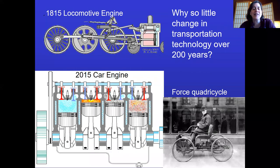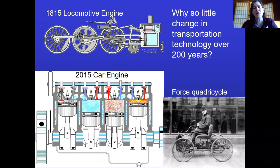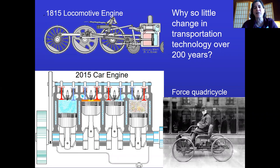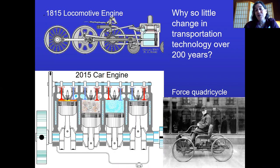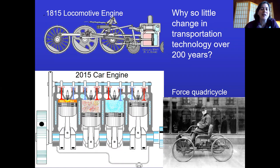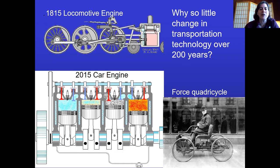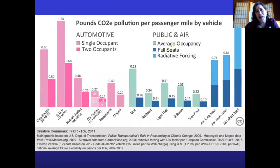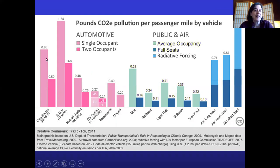We've had combustion engines since the early 1800s, and in 2015 we're still basically doing controlled explosions in car engines — the same technology for over 200 years. Looking at pounds of CO2 produced per person: if you're driving a single-occupant vehicle, you create way more pollution per person than if you put two or more people in the car. As you move to public transportation like buses running at average or full capacity, the CO2 per passenger mile gets even better.